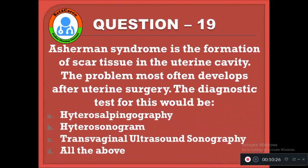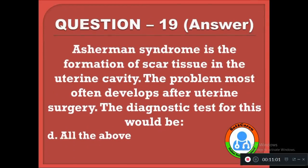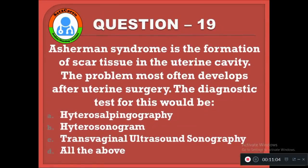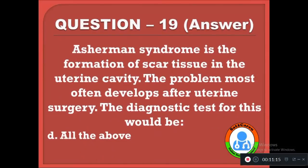Question 19: Asherman syndrome is the formation of scar tissue in the uterine cavity, most often developing after uterine surgery. The diagnostic test for this would be — option A: hysterosalpingography, B: hysterosonogram, C: transvaginal ultrasound sonography, D: all of the above. The correct answer is D, all of the above — hysterosalpingography, hysterosonogram, and transvaginal ultrasound sonography are all used in the diagnosis of Asherman syndrome.